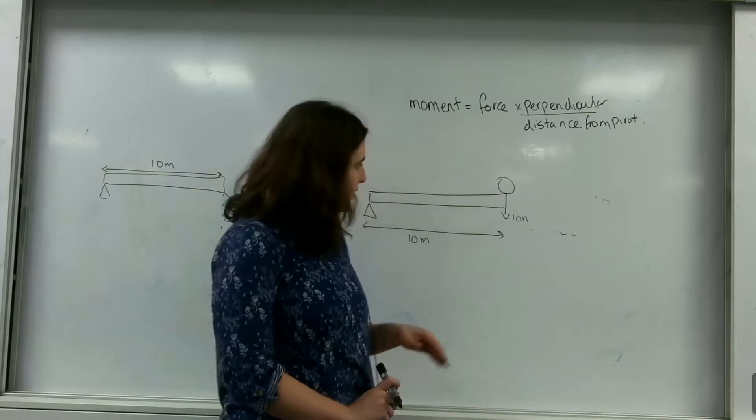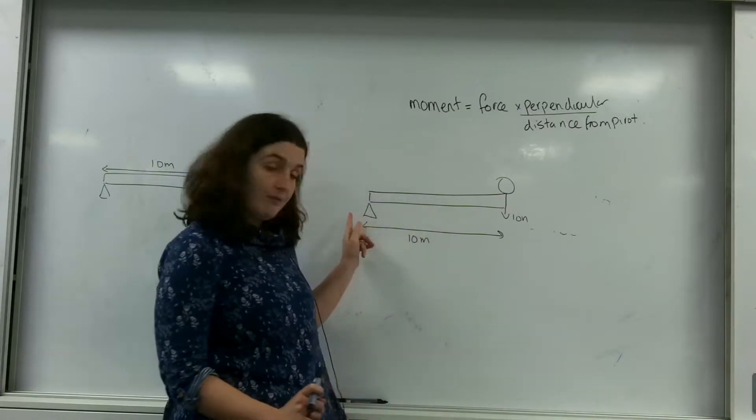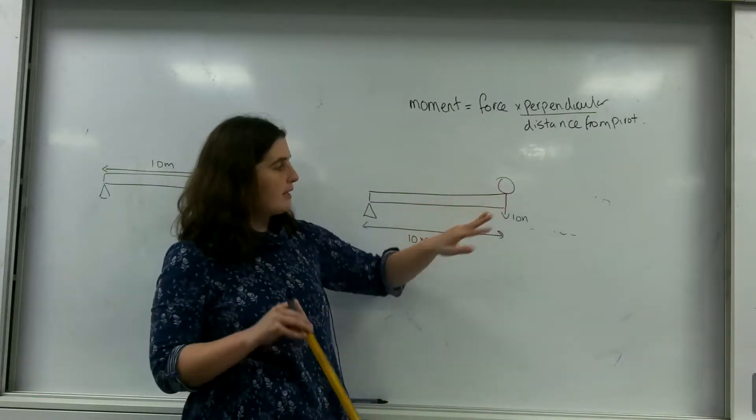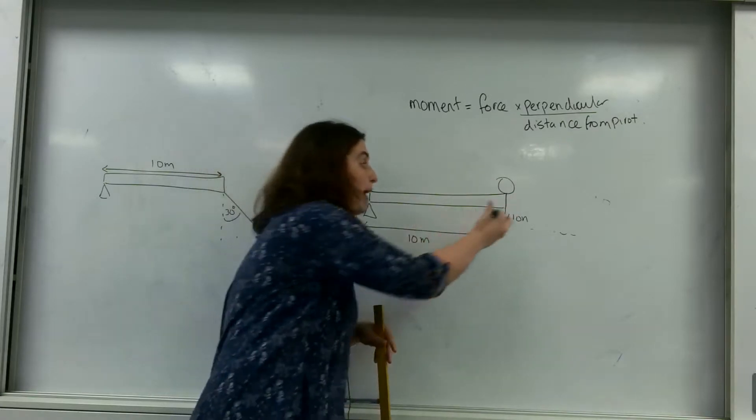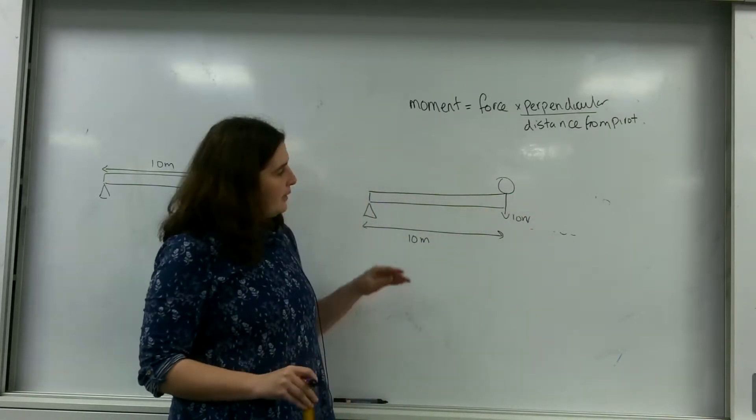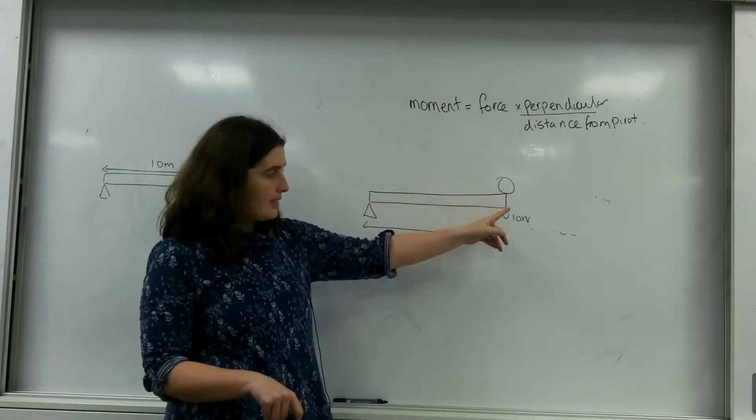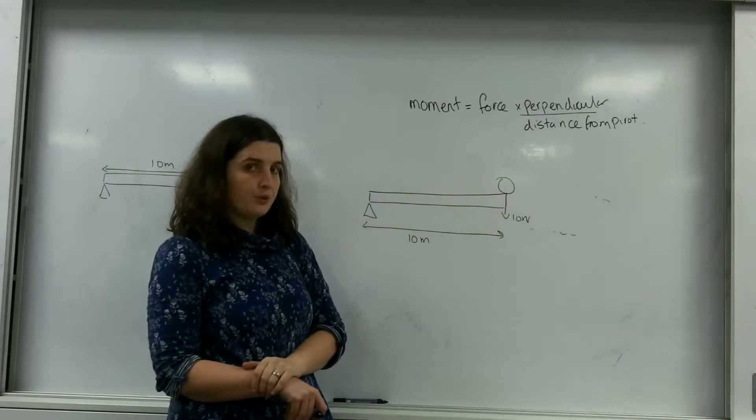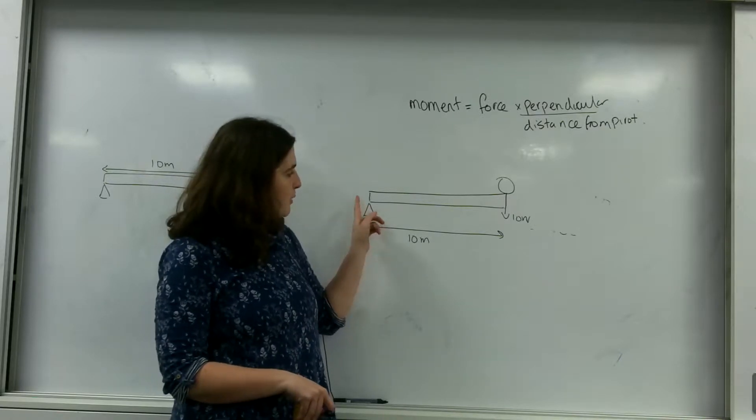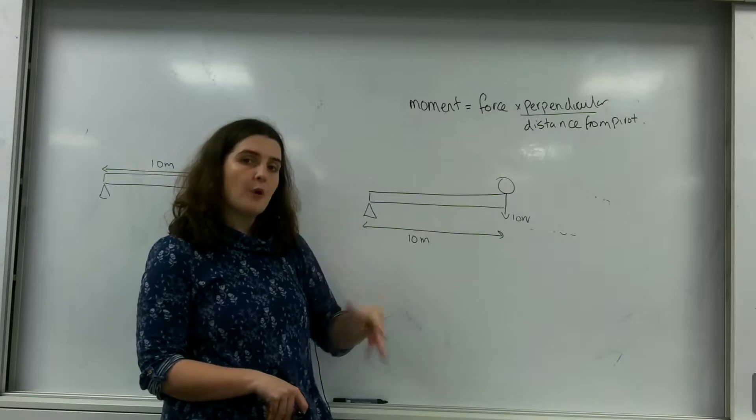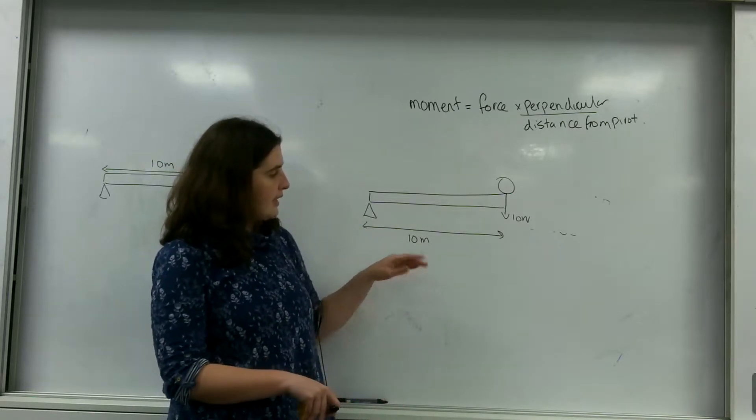And by that I mean this. Now I have a diagram here with my pivot. I've got a beam like this, and I have a boulder at the end that has a weight of 10 newtons. Now the distance between the pivot and the 10 newton force, I want the distance where here and here where the distance bisects, is going to be at a right angle.